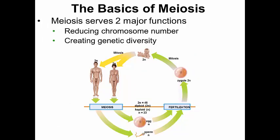We now begin our discussion of meiosis. Remember, meiosis serves one and only one purpose, and that purpose is sexual reproduction — meiosis creates the gametes, the eggs and the sperm, and nothing else. In order to understand meiosis, we need to understand the terms diploid and haploid. This diagram is very helpful for understanding diploid and haploid.